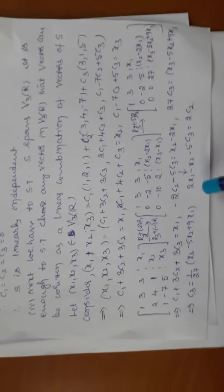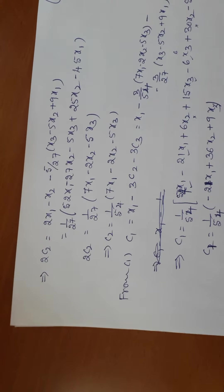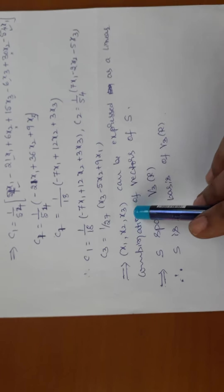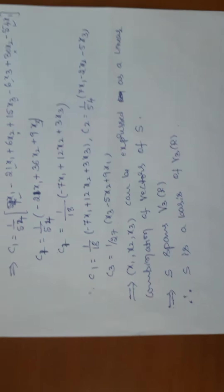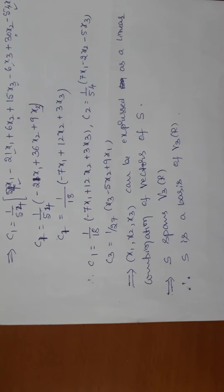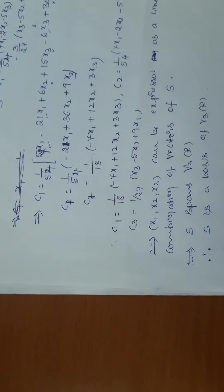Write the augmented matrix and apply elementary row operations to convert to echelon form. From the last equation find c3, substitute into the second equation to find c2, then substitute c2 and c3 into the first equation to find c1 — all expressed in terms of x1, x2, x3. Since any vector can be expressed as a linear combination of vectors of S, S spans V3(R). Since S is linearly independent and spans V3(R), S is a basis of V3(R) with dimension 3.